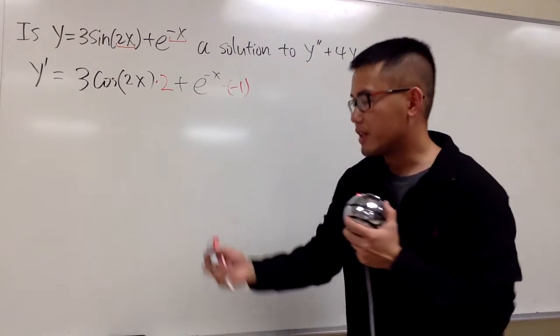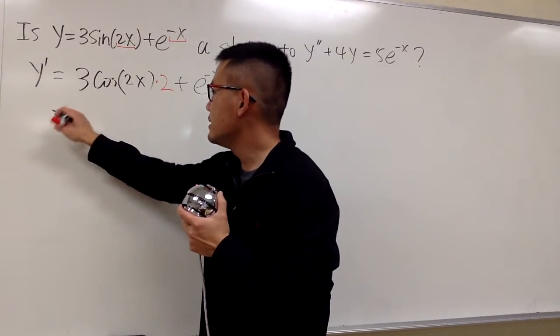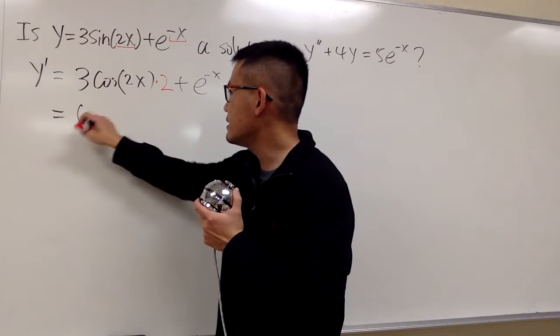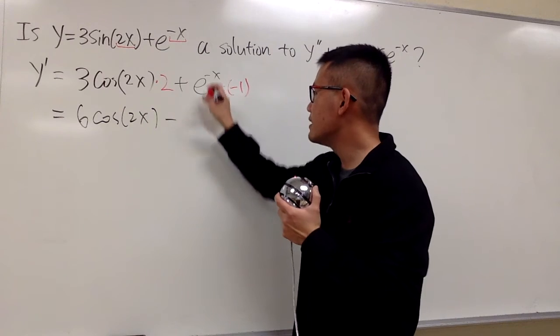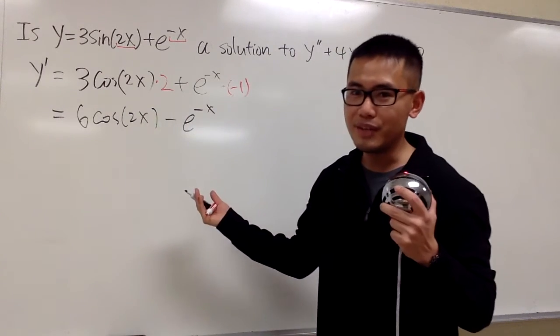And before we do the next derivative, let's clean things up. This is equal to 3 times 2, which is 6. And then we have cosine of 2x. And then this time is minus, and we have e to the negative x. That's the first derivative.